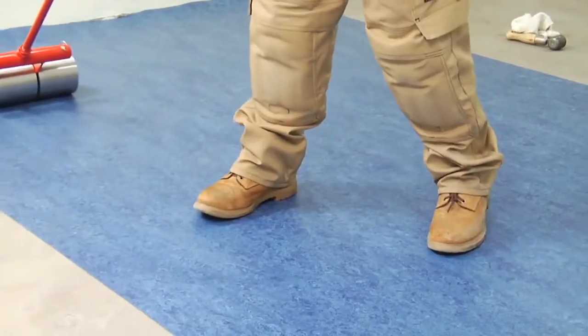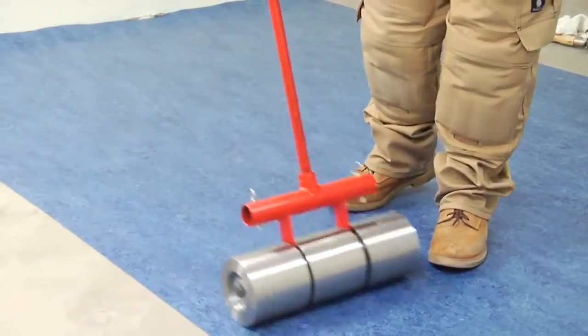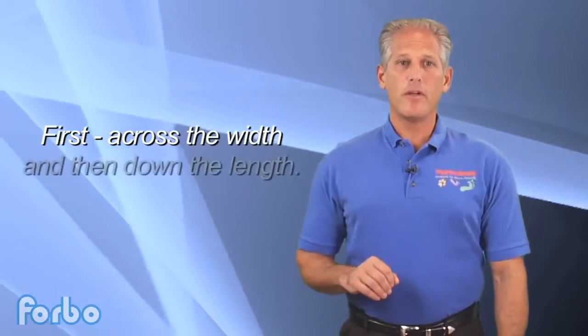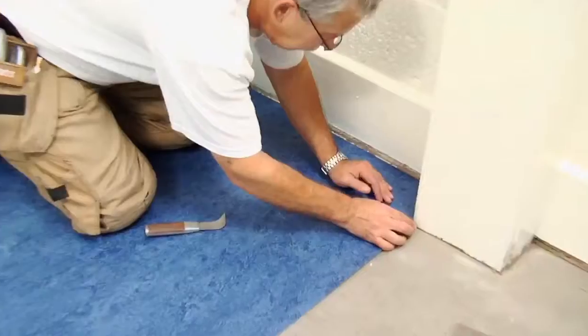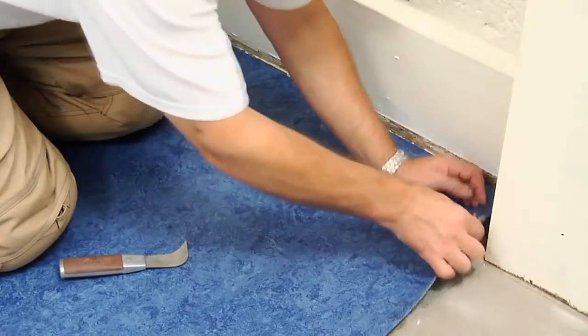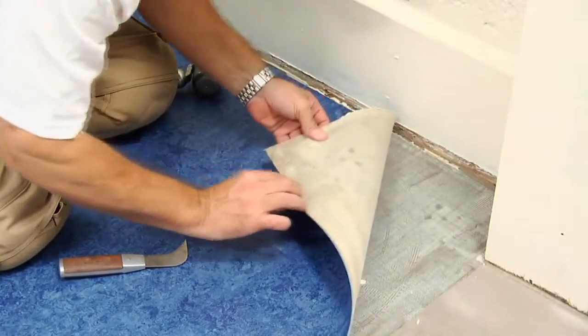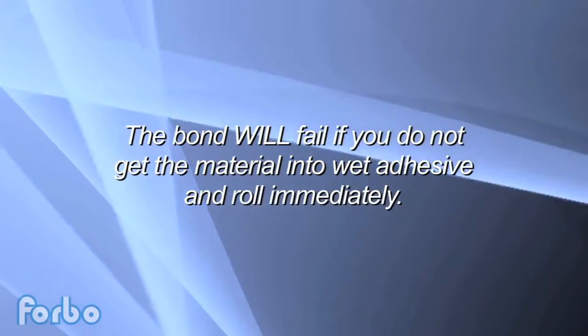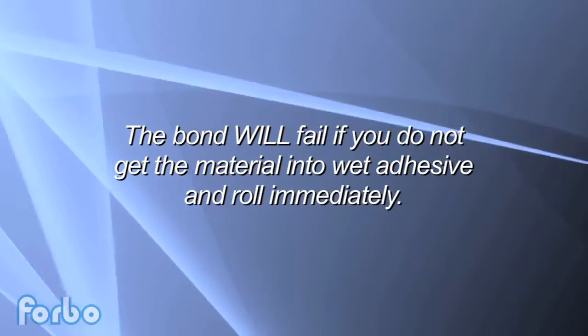Once the sheets are placed in the adhesive, roll immediately with a 100-pound roller, rolling first across the width of the material and then rolling down the length. Always check for proper adhesive transfer. You must have complete wet transfer from the back of the sheet to the subfloor. The bond will fail if you do not get the material into wet adhesive and rolled immediately.